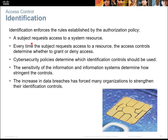Identification is required by system resources to determine access. Cybersecurity policies like IMAGENET-4 identify the controls that can be used and the sensitivity of the information, where security clearances come into play. The increase in data breaches has forced many organizations to strengthen controls, which means nowadays you often need dual authentication — a number or some physical aspect of yourself, whether fingerprint or retinal scan, to get into an organization.